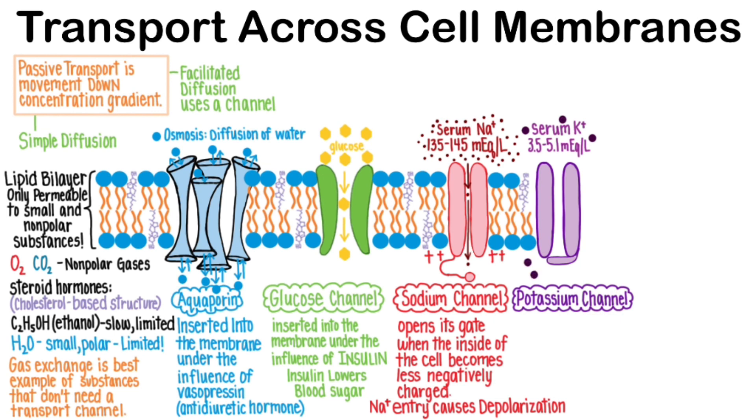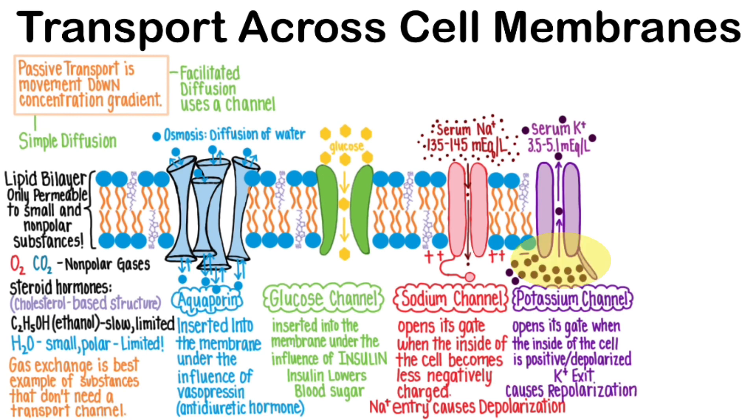And notice the very high concentration of potassium ions that is maintained inside of the cell. A voltage-gated potassium channel opens its gate when the inside of the cell is positive or depolarized. Since potassium is highly concentrated on the inside of the cell, it diffuses out of the cell to go down its concentration gradient. Potassium exit causes repolarization of a cell to make the inner membrane negative again.